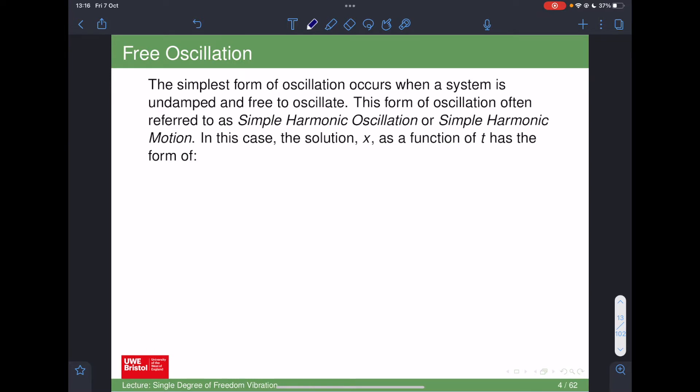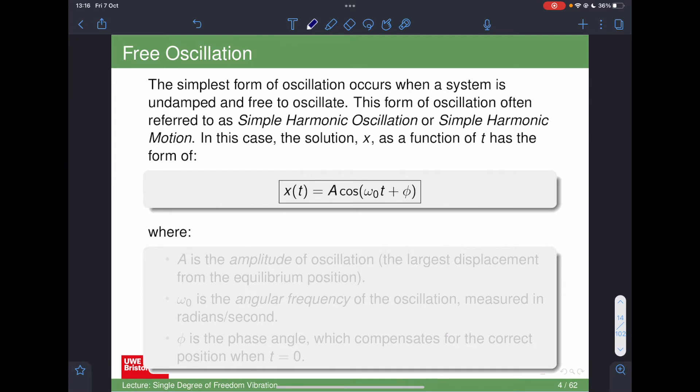We'll start with the most basic form of oscillation, which is free oscillation of an undamped system. This is often called simple harmonic motion or simple harmonic oscillation. We start with this equation, which is a sinusoid. Any sinusoid that centers around zero can be represented with this equation: x(t) = A cos(ωₒt + φ). A sinusoid has an amplitude, which is how high it is, how big it is. There's a frequency, which is how quickly the sinusoid oscillates—if this value is very low, it's a very low frequency; if it's very high, it's a very high frequency. Then this angle at the end, phi, is known as the phase angle.